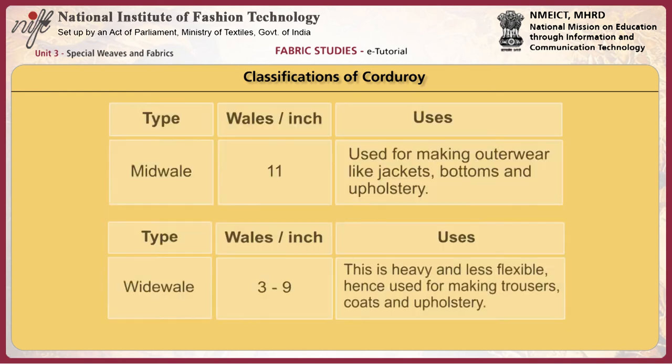Mid wale has about 11 wales per inch, used for making outerwear, jackets, bottoms, and upholstery. Wide wale has 3 to 9 wales per inch, this is heavy and less flexible, and used for making trousers, coats, and upholstery.